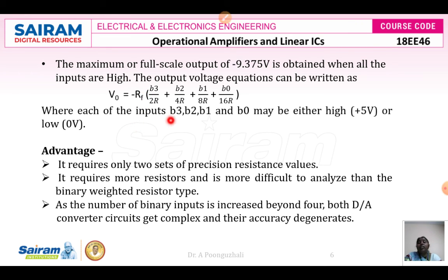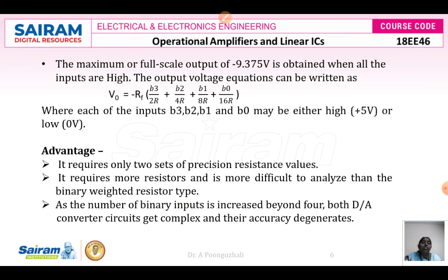The advantage of the R2R DAC method is that it requires only two sets of precision resistance values, R and 2R. When more resistors are required in the binary-weighted resistor type, it becomes more difficult to analyze. As the number of binary inputs increases beyond 4, both types of D/A converters become complex and accuracy degenerates.